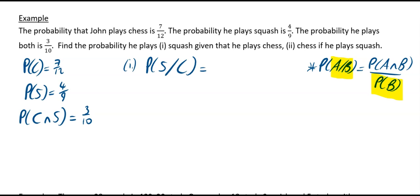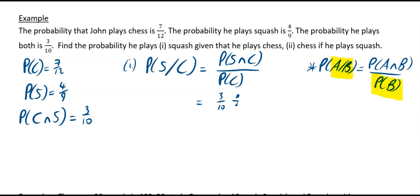So for squash given chess, it looks like C is dividing S, so probability of C goes on the bottom line and probability of S intersect C goes on the top. That gives us (3/10) divided by (7/12), which works out to 18/35.